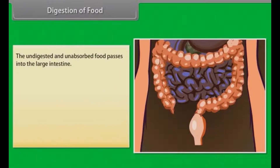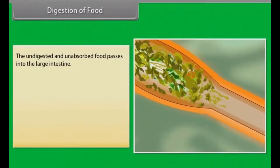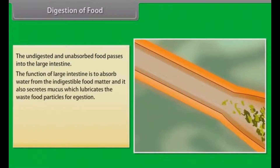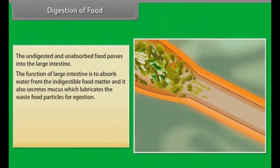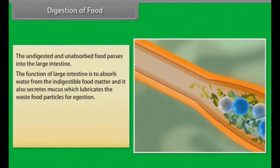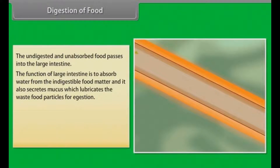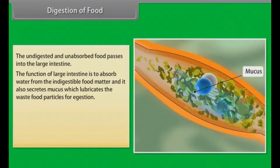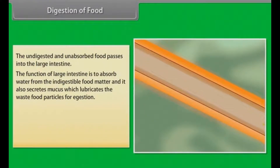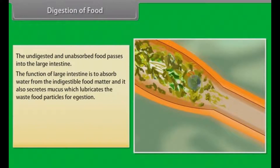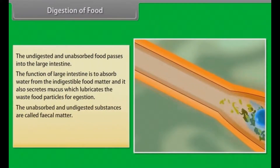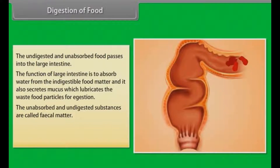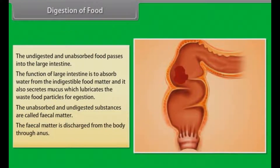The undigested and unabsorbed food passes into the large intestine. The function of the large intestine is to absorb water from the indigestible food matter, and it also secretes mucus which lubricates the waste food particles for ejection. The unabsorbed and undigested substances are called faecal matter, which is discharged from the body through the anus.